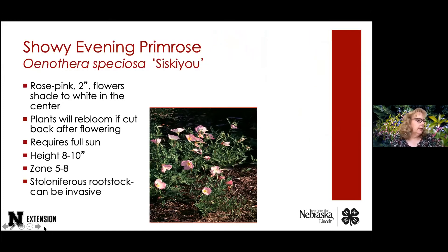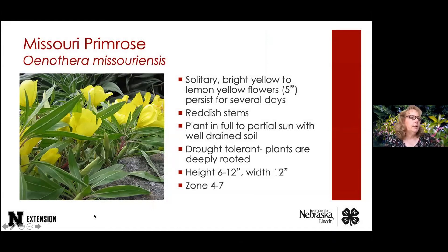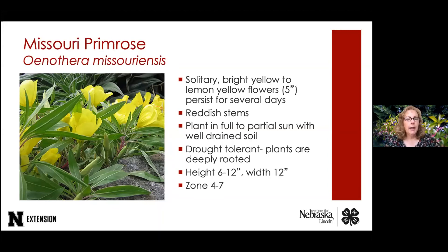Missouri primrose is in the same genus as showy evening primrose but looks very different. It grows much closer to the ground with much narrower, elongated spear-shaped leaves. The flowers are beautiful bright yellow, with reddish stems. These plants are very drought tolerant once established and prefer full sun. They're very hardy and tough — a great plant for hot, dry landscapes.